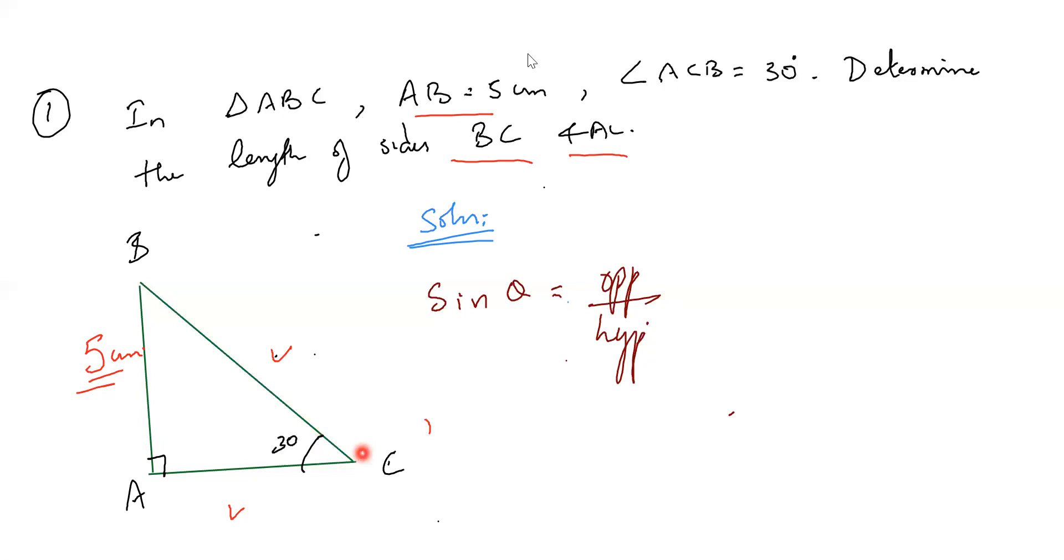So it is AB by BC. What is sine 30? Opposite side 5, BC we don't know. So we will take it as BC itself.